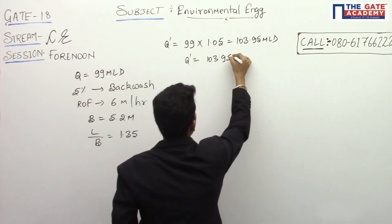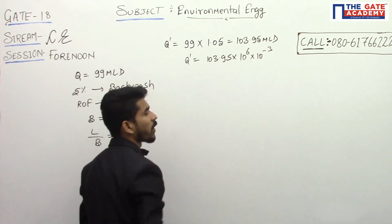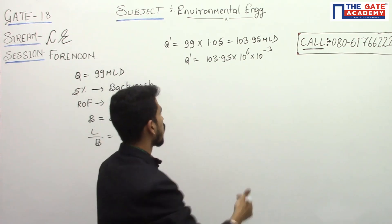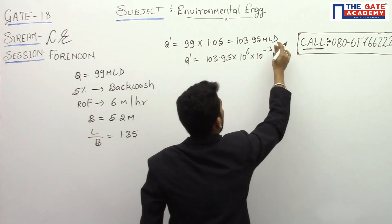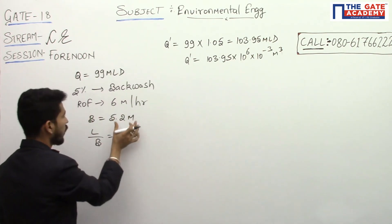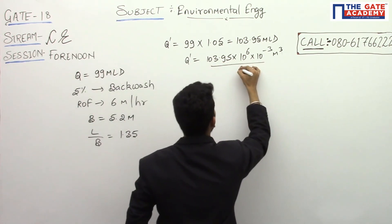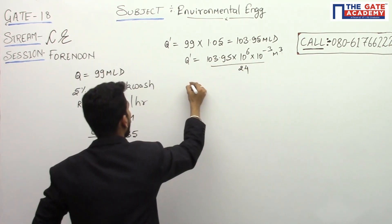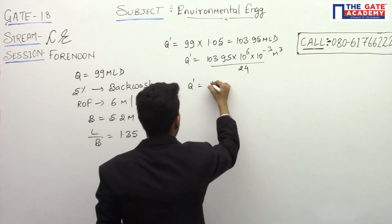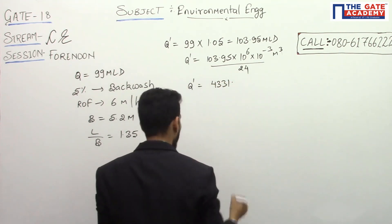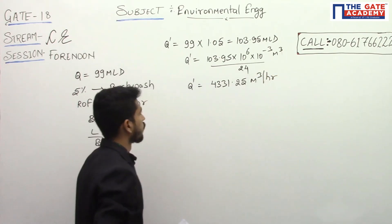Let us convert 103.95 MLD into cubic meters: multiply by 10 to the power 6 liters, then by 10 to the power minus 3 to get cubic meters. Then divide by 24 to convert per day to per hour, because the rate of filtration is given in per hour. So the effective discharge Q equals 4331.25 cubic meters per hour.